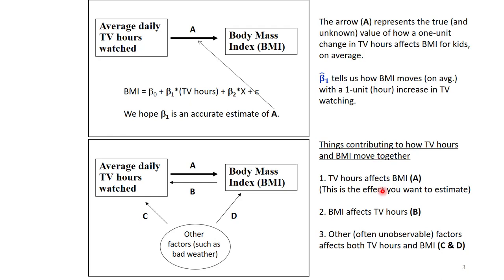Here are the three main things that can contribute to these two variables moving together. First, TV hours could affect BMI. That's the effect that we want to try to capture. Second, there could be the reverse causality that BMI affects TV hours. I label that B here, not to be confused with beta. Third, there could be some other factors, probably uncontrolled for, or unobservable that could affect both TV hours and BMI. A good example here is bad weather. If there's bad weather, it could lead to kids being inside more that could cause them to watch more TV. It also could lead them to be less active, which would cause them to perhaps gain weight.